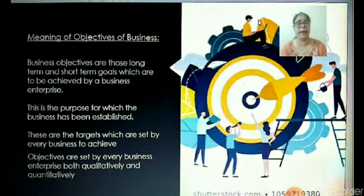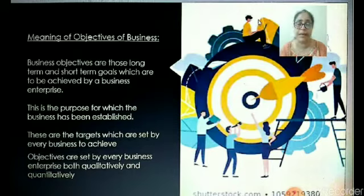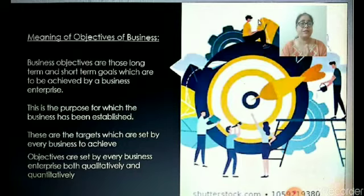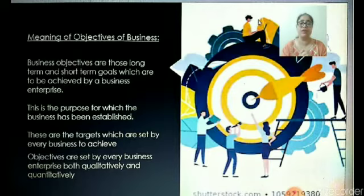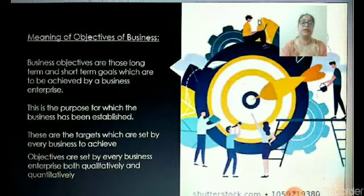These are the targets which are set by every business to achieve, and objectives are set by every business both qualitatively as well as quantitatively. We can understand that the objectives of business are the purpose for which the business is running, and these are the targets without which the efforts of every business are going to be wasted. Without these targets, the business is just like a ship moving without a radar. These business objectives give a particular purpose and a specific target to the business which it has to achieve in the short run as well as in the long run. Now let us see how these objectives can be classified.